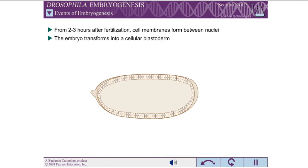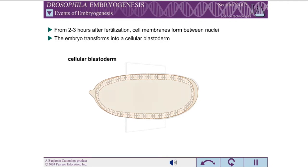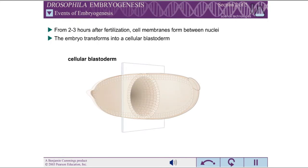During a one-hour period from two to three hours after fertilization, cell membranes form between adjacent nuclei. By three hours after fertilization, the embryo has been transformed into a cellular blastoderm — essentially a hollow ball of cells.